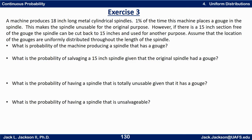Alright, let's try another one. This is a pretty realistic situation I think. A machine produces an 18 inch long metal cylindrical spindle. 1% of the time the machine places a gouge in the spindle. This makes the spindle unusable for the original purpose. However, if there's a 15 inch section free of the gouge, the spindle can be cut back to 15 inches and used for another purpose. Otherwise, they might have to maybe just melt the whole thing down and start over. Now assume that the location of the gouges are uniformly distributed through the length of the spindle.